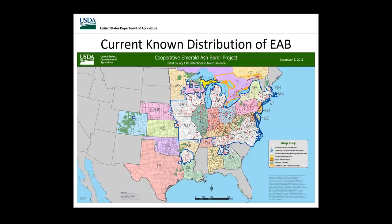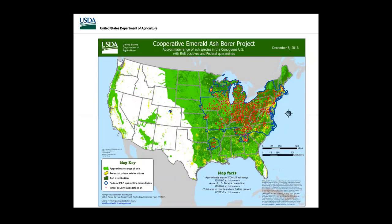Here's another look with known distribution of EAB — red dots showing positive counties and the blue quarantine boundary outline. Another overlay shows the red positive counties on top of the ash range, illustrating the range still not under quarantine or not infested. Yellow areas represent potential urban ash locations, and green represents the native ash range.